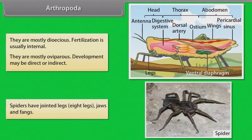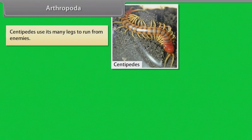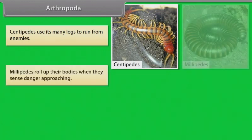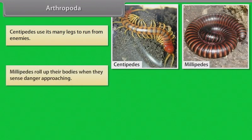Spiders have jointed legs — eight legs — along with jaws and fangs. Centipedes use their many legs to run from enemies. Millipedes roll up their bodies when they sense danger approaching.